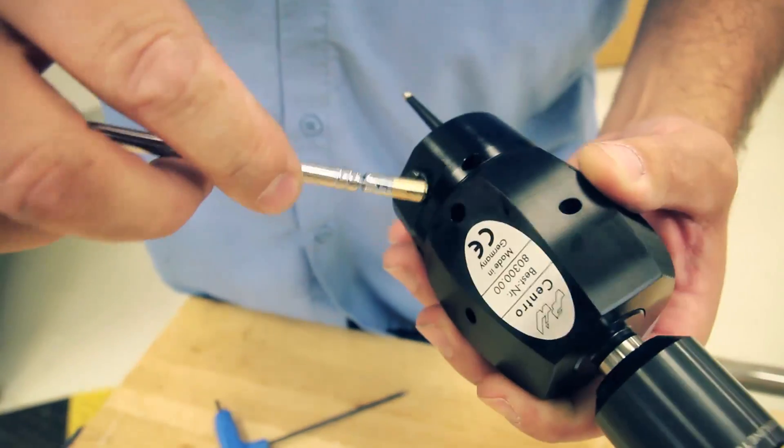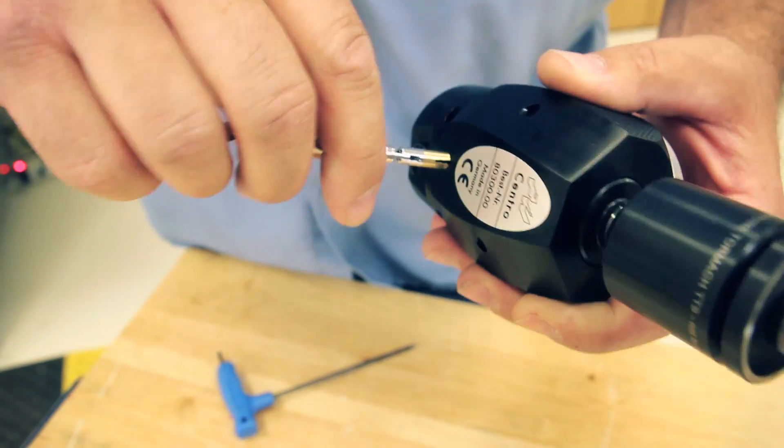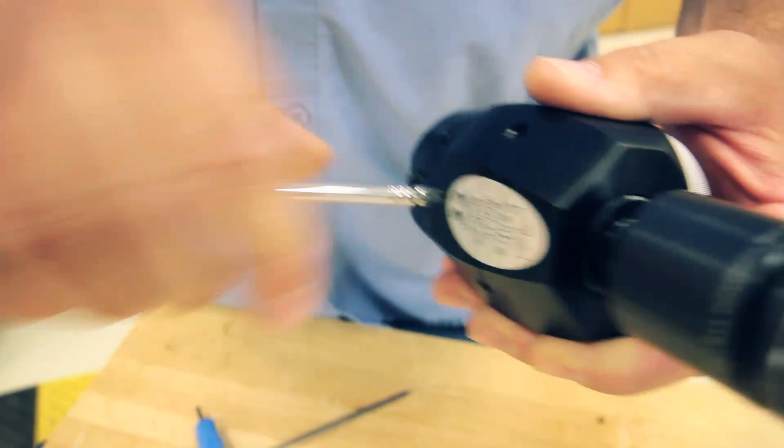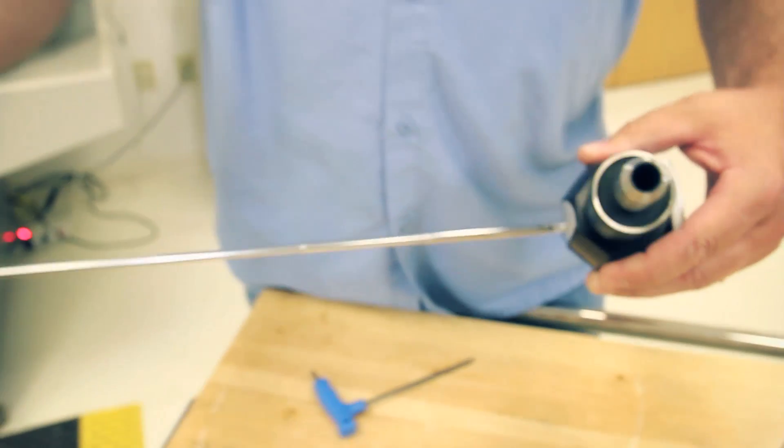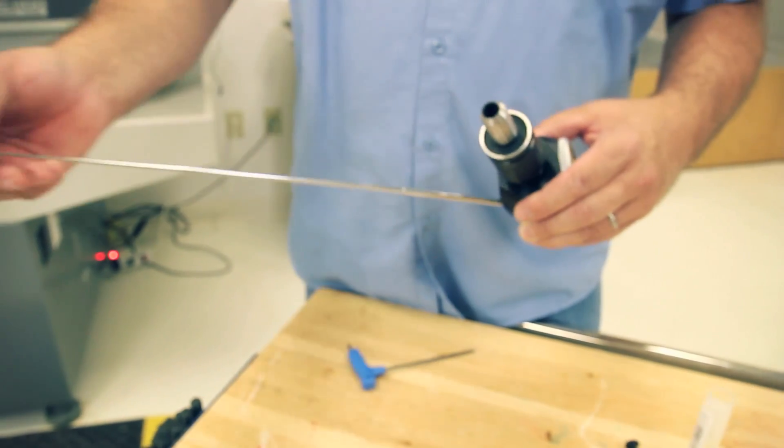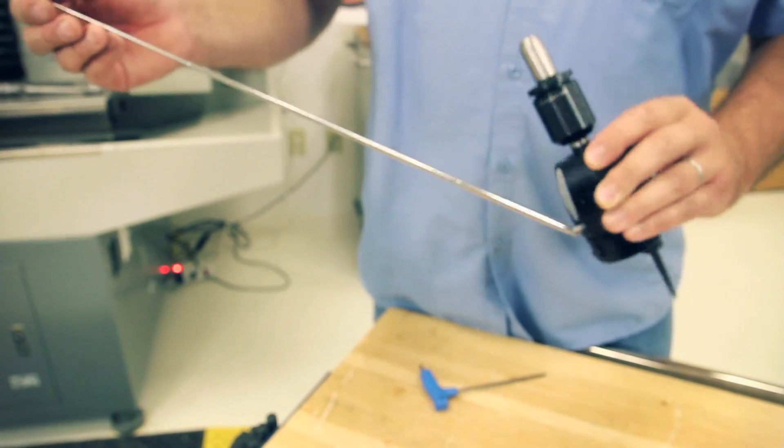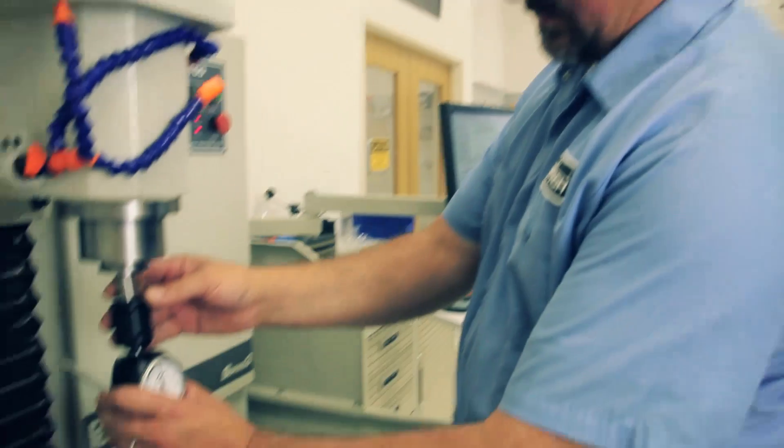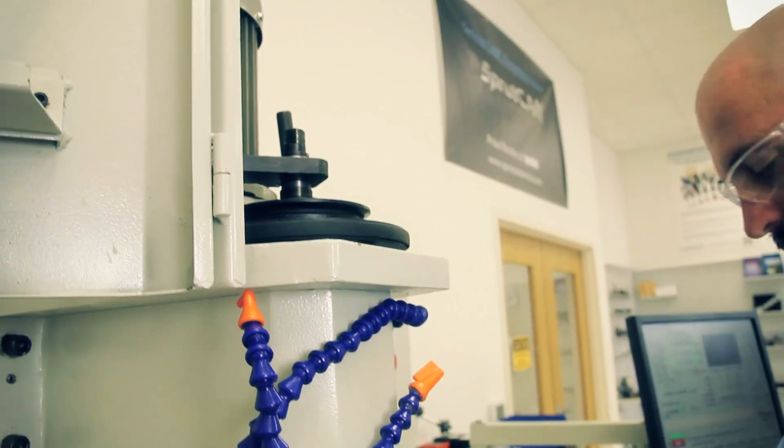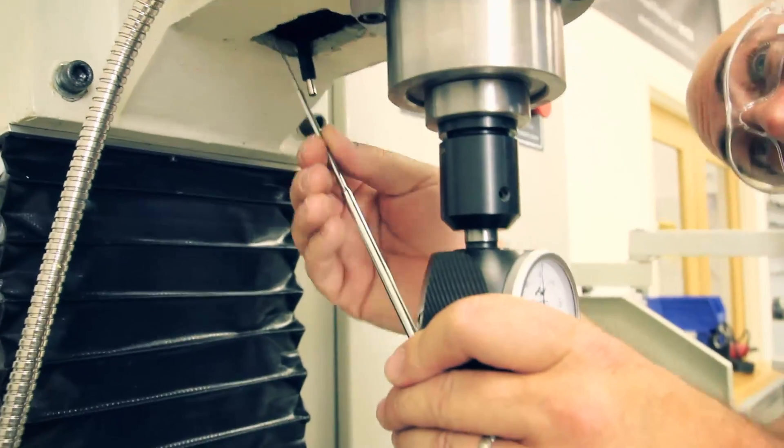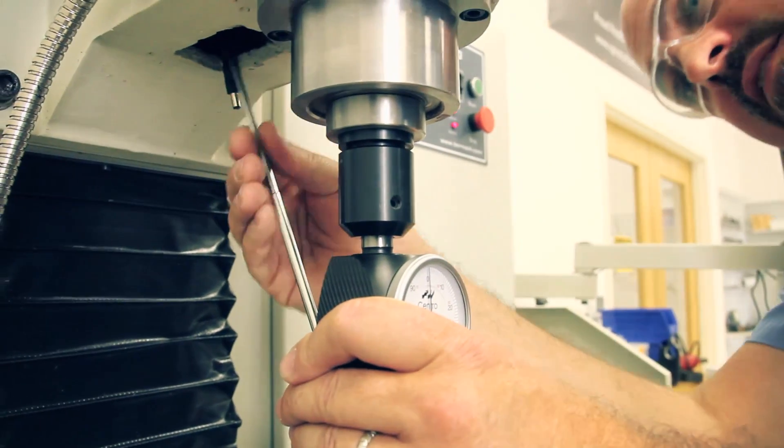And the anti-rotation arm, this little flex arm, that goes in this hole in the back side of the indicator body. Just presses in.